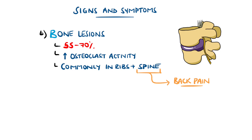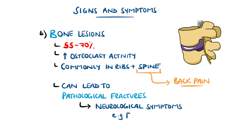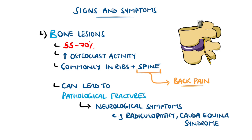Multiple myeloma should be considered in those above 40 with persistent unexplained back pain, especially at night. These lesions can lead to pathological fractures and spinal root compression, and therefore neurological symptoms like radiculopathies or even Cauda Equina syndrome in some cases.